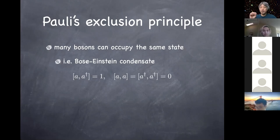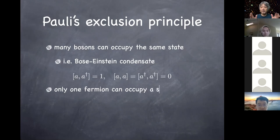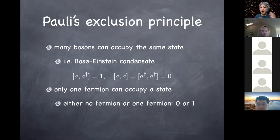For fermions, only one fermion can occupy a given quantum state. This is binary — whether you have a particle there or not. It's always zero or one; you can never have two, three, four particles in the same state.